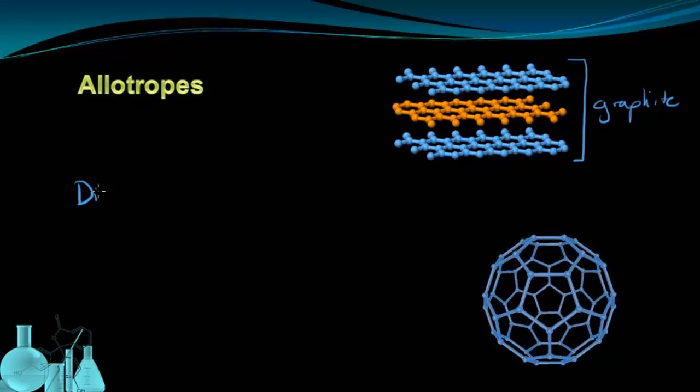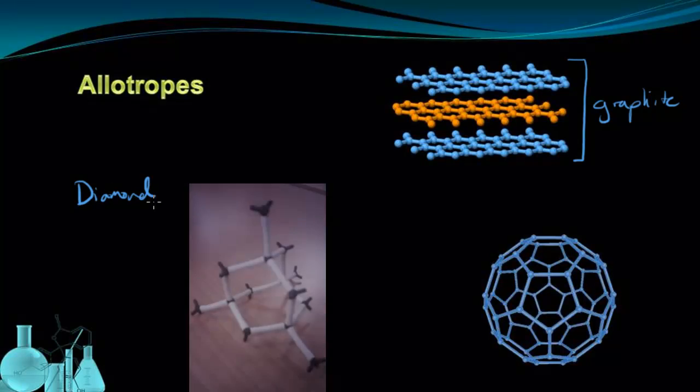Now diamond is another allotrope of carbon. In the case of diamond, each carbon, as you can see in this picture here, each carbon is attached to four other carbons in a tetrahedral arrangement. And this repeating pattern gives diamond its crystalline structure made up of carbon. It also results in diamond having incredibly strong structural properties. It's a very hard substance because of its highly ordered structure.